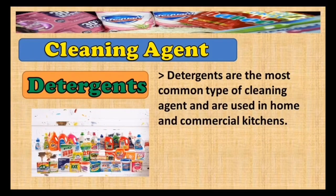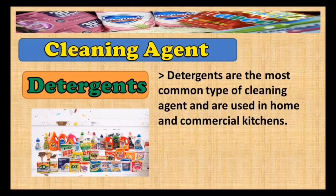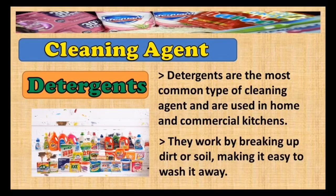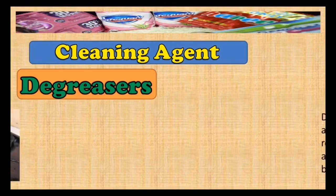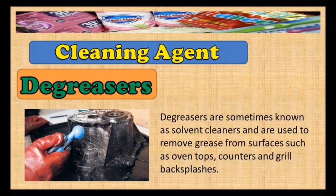Detergents are the most common type of cleaning agent. They are used in home and in commercial kitchens. They work by breaking up dirt or soil, making it easy to wash it away. Degreasers are sometimes known as solvent cleaners, and are used to remove grease from surfaces such as oven tops, counters, and grill back splashes.